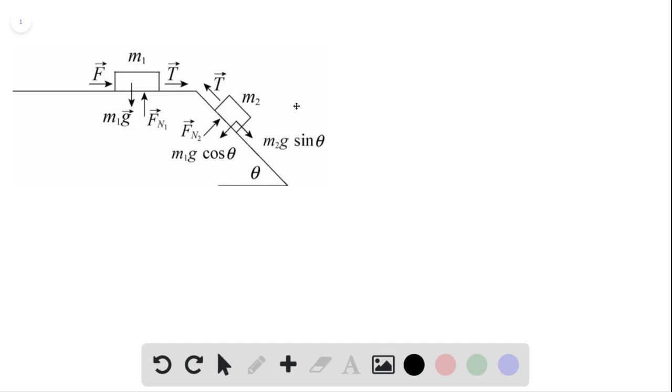Here would be the free body diagram for the system. We have mass sub 1 would be the 3.0 kilogram mass and mass sub 2 would be a 1.0 kilogram mass.